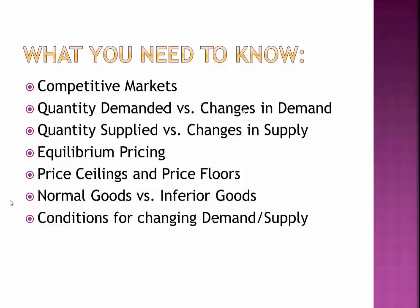Here's what you need to know for this chapter: what a competitive market is, the difference between quantity demanded changes and changes in demand, the difference between quantity supplied and changes in supply, equilibrium pricing, price ceilings and price floors, normal goods versus inferior goods, and the conditions for changing demand and supply.